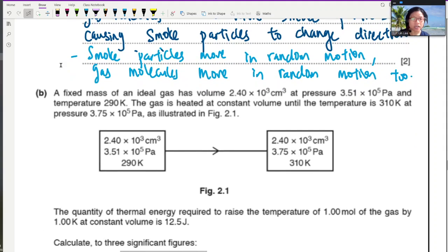Part B seems like a state change question. So, you have a fixed mass of ideal gas, and this is your volume pressure. So they very nicely put in the books for you. The gas is heated at constant volume. So this is an important point. Until the temperature is 310 Kelvin at a higher pressure.